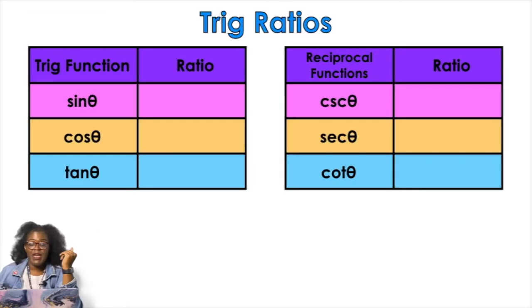The first thing that you need to know, this is just background knowledge. You should already know that trig functions, their ratios are sine is opposite over hypotenuse, cosine is adjacent over hypotenuse, and tangent is opposite over adjacent.